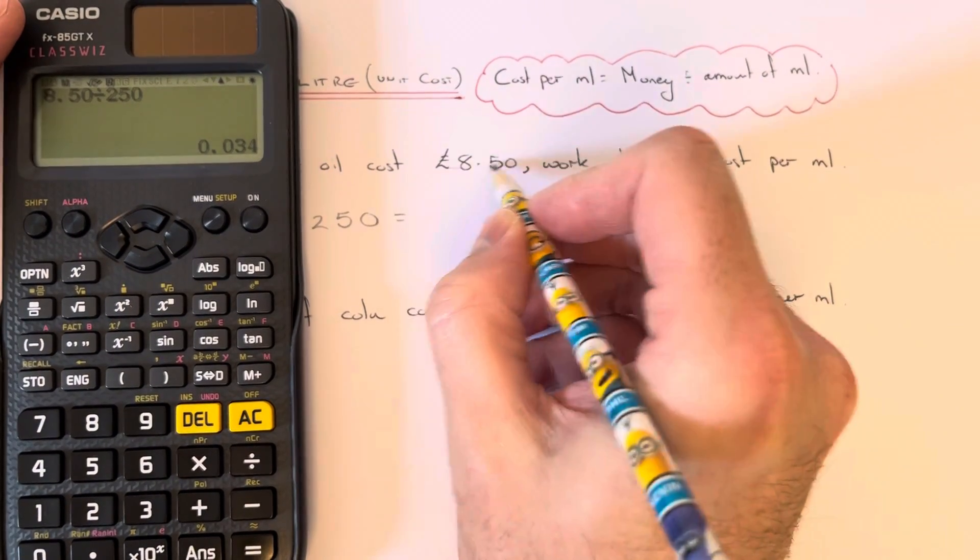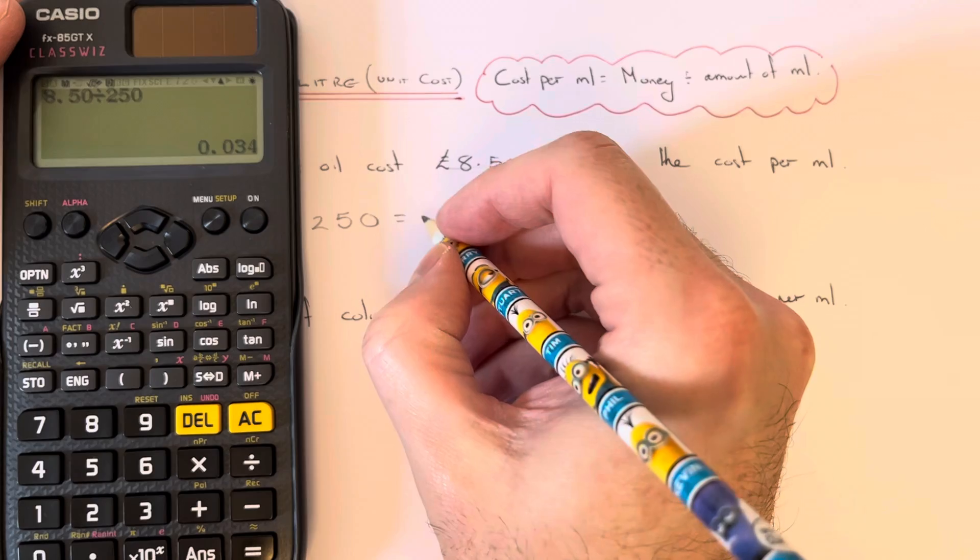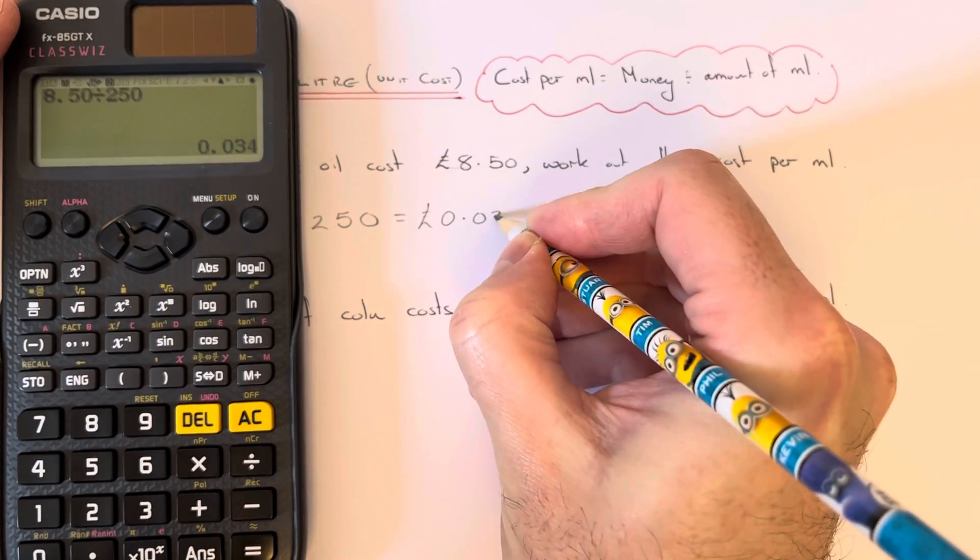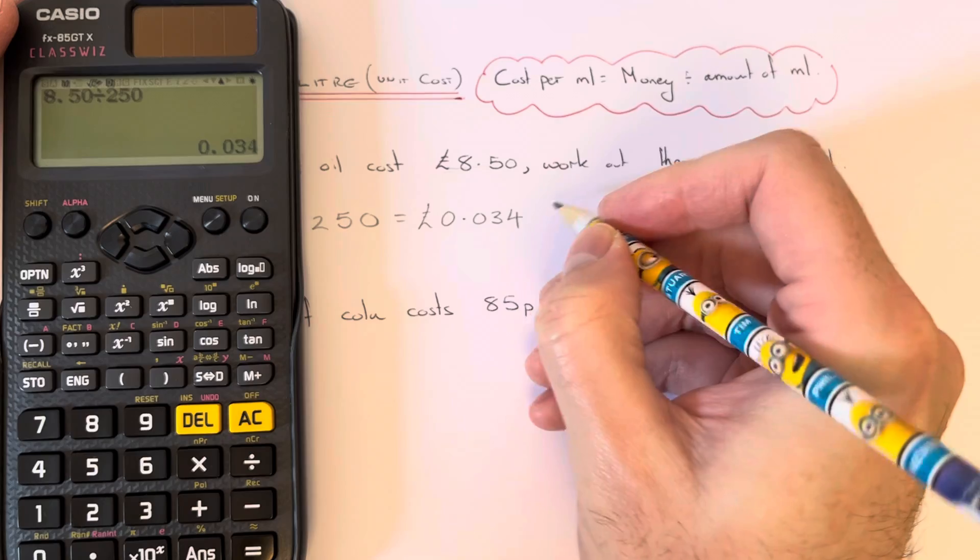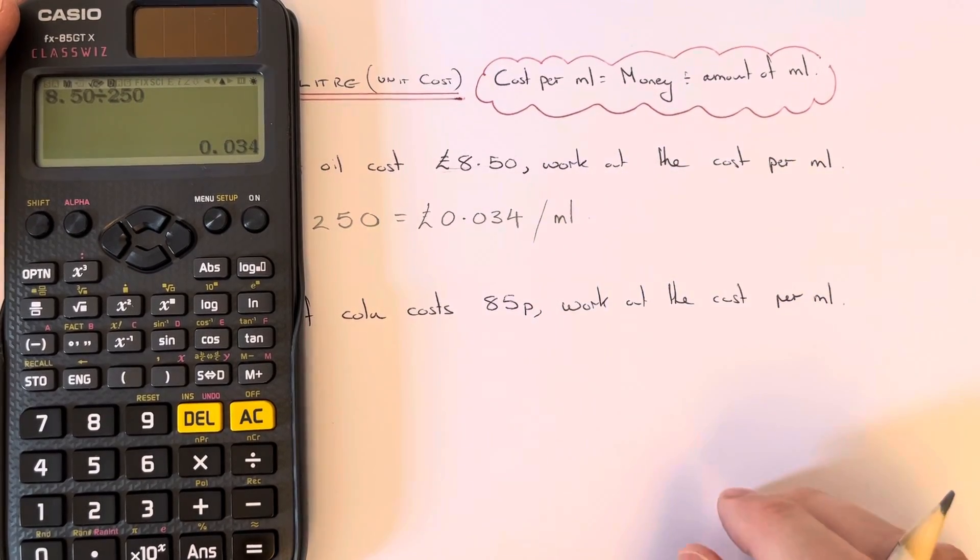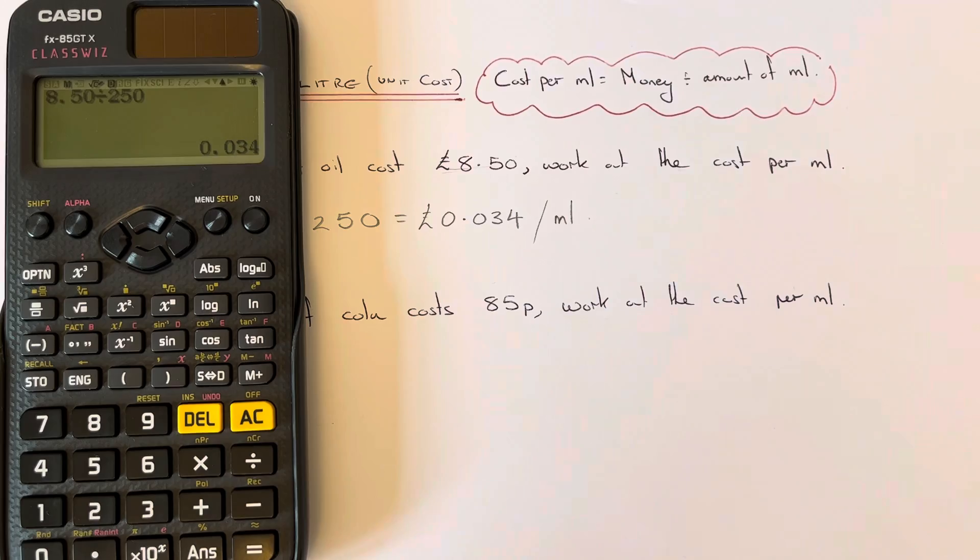That answer will be in pounds because we put the cost in in pounds. So it'd be 0.034 pounds per milliliter, so that's around about 3.4 pence.